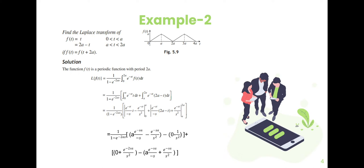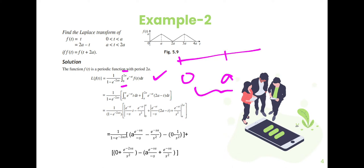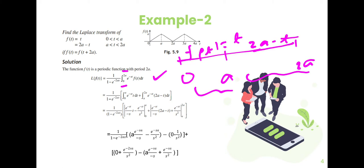Applying the Laplace transform formula for periodic functions, the result is 1 divided by (1 minus e to the power minus 2as), multiplied by the integral split into two parts: integral from 0 to a of e to the power minus st times t dt, plus integral from a to 2a of e to the power minus st times (2a minus t) dt.